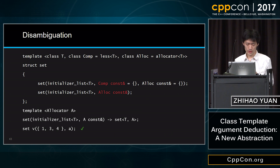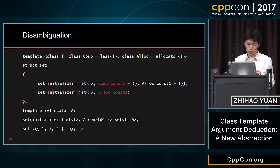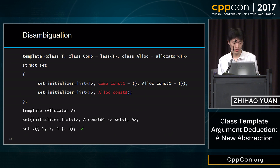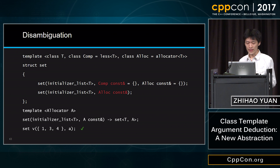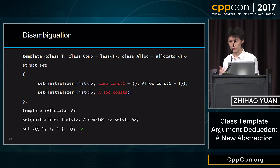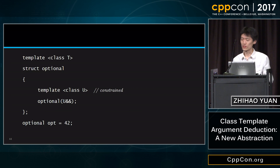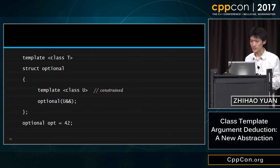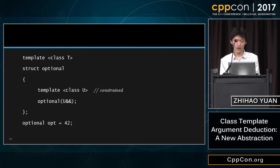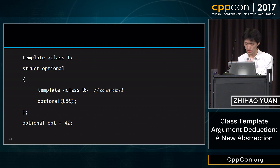It happens to be the case that in C++, all types can participate in overload resolution for copying. Just look at the highlighted column in this slide — there's no slot that says copy construction is not declared. The copy construction declaration is always there, even if you deleted its body. A deleted body doesn't change the fact that it can participate in overload resolution, and the result is that all types have the potential for being copied.